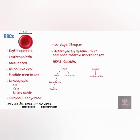The biliverdin, which is a green pigment, is converted into bilirubin, which is a yellow-orange pigment. Bilirubin enters the blood and is transported to the liver. Within the liver, bilirubin is conjugated and released by liver cells into bile, which passes into the small intestine and then into the large intestine. In the large intestine, bacteria converts bilirubin into urobilinogen. Some urobilinogen is absorbed back into the blood, converted to a yellow pigment called urobilin, which is then excreted in the urine. Most urobilinogen is however eliminated in feces in the form of a brown pigment called stercobilin, which gives feces its characteristic color.